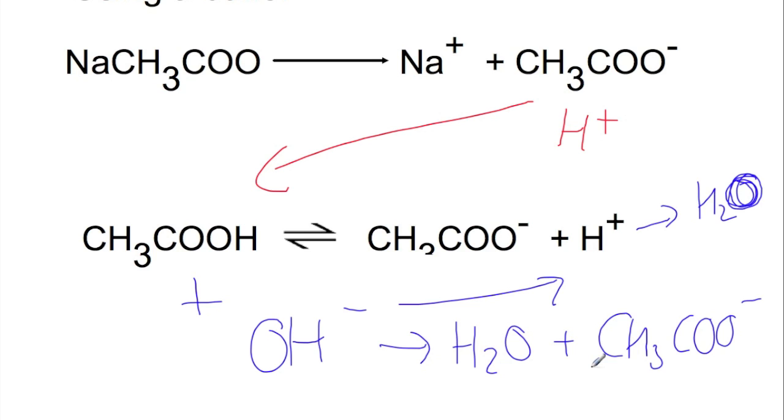In summary, buffers are systems which are made of weak acids and salts of those acids. They are used to keep the pH of a system constant. You often find them in biological systems. You can calculate the pH of the buffer using the equation that you can find at the front of your data book.